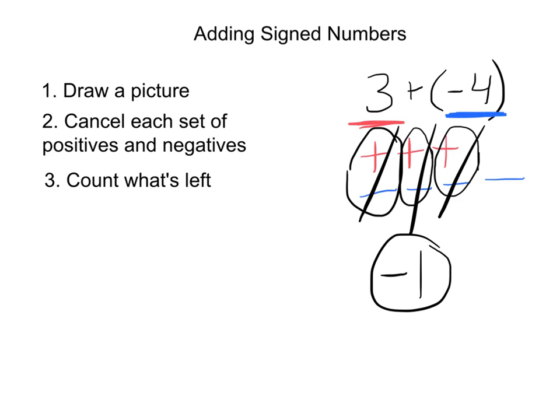Another way you can think about these problems is like money. For this problem, three positives would be like you actually have three dollars. Negative means you have to pay, so in this case you have three dollars but you have to pay four dollars. You're going to pay three, and then you're still going to owe one more dollar — so that gives you the answer of negative one.